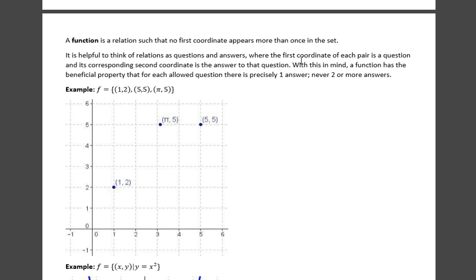With this in mind, a function has the beneficial property that for each allowed question there is precisely one answer, never two or more answers.